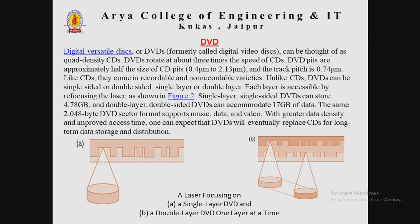The next topic is DVD, also known as digital versatile disk or digital video disk, which can be thought of as a higher-density CD. DVDs rotate at about three times the speed of CDs and are approximately half the size of CD pits. Like CDs, they come in recordable and non-recordable varieties. DVD technology improves upon CD technology in many ways.